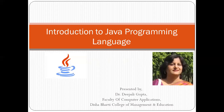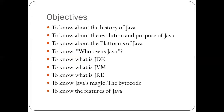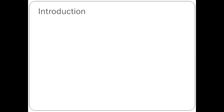Welcome to an introduction to Java programming language. The objectives for this session will be to know about the history of Java, to know about the evolution and purpose of Java, to know about the platforms of Java, to know who owns Java, to know what is JDK, what is JVM and what is JRE, to know Java's magic — the bytecode, and to know the features of Java.